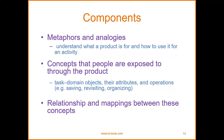Components include metaphors and analogies. Based on the definition, it is about understanding what a product is for and how to use it for an activity. Concepts that people are exposed to through the product — for example, domain objects, their attributes, and operations — including saving, revisiting, and organizing. The relationships and mappings between these concept components are very important for a user interface to achieve its usability functions.